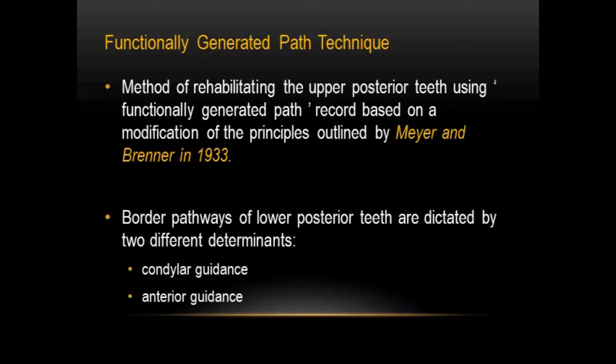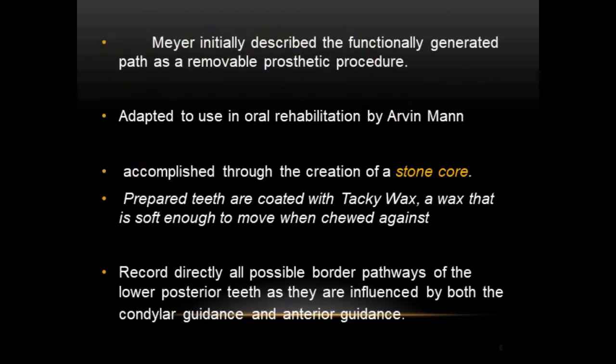The functionally generated path (FGP) technique is the method of rehabilitating the upper posterior teeth using a functionally generated path record, based on modifications of principles advised by Mayer and Brenner in 1933. The border pathways of the lower posterior teeth are dictated by two determinants: condylar guidance and anterior guidance. Mayer first described this technique for removable prosthetic procedures, and it was Dr. Arvin Mann who applied it in oral rehabilitation through creation of a model called the stone core or functional core.